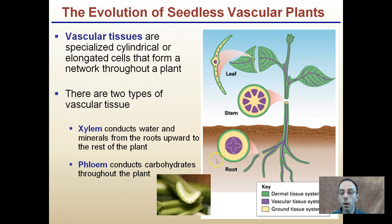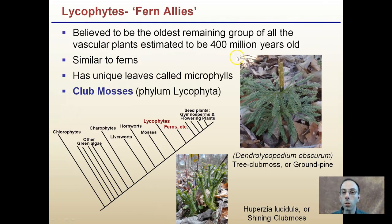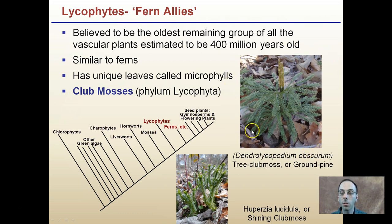So phloem is transporting mainly sugars and carbohydrates, while xylem is conducting water and some minerals, mainly working from the roots upward in one direction. Now, believed to be the oldest remaining group of vascular plants, estimated to have been around 400 million years — if you've ever been walking in the woods, you may see examples of ground pine, which are a kind of subset of club mosses. They won't get any taller; this is their typical fully grown size.